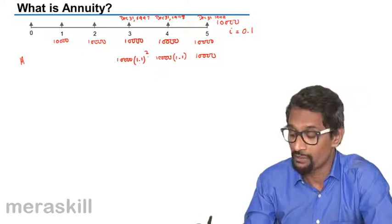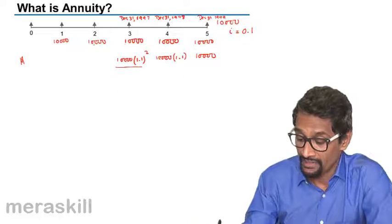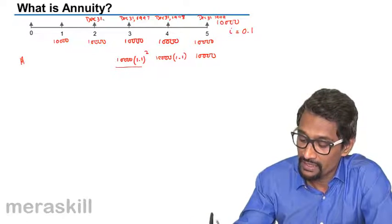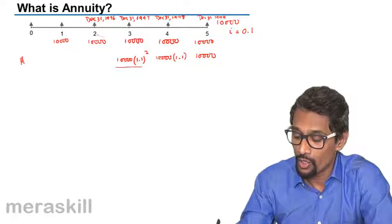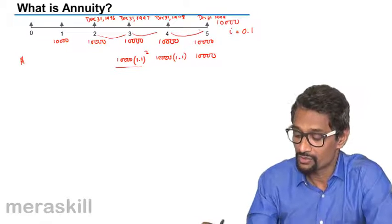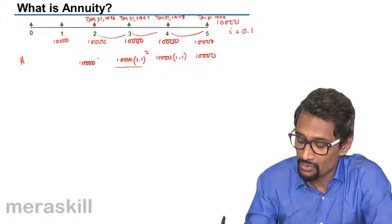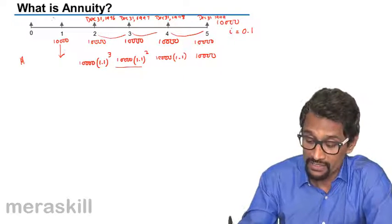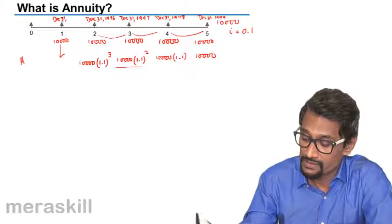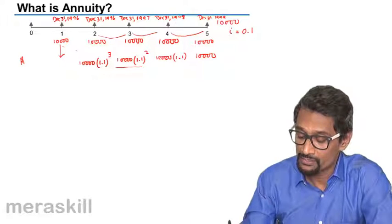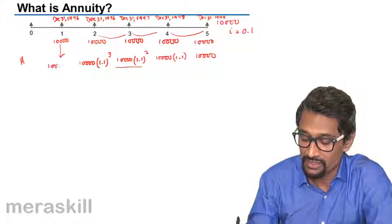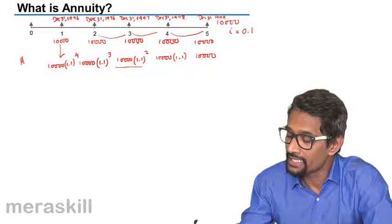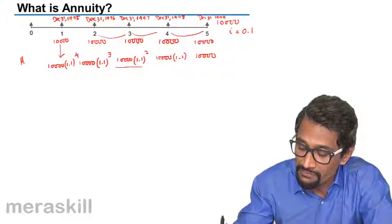The deposit made on December 31st 1997 accrues interest for two years, so it becomes ten thousand into 1.1 squared. The deposit on December 31st 1996 accrues for three years, becoming ten thousand into 1.1 cubed. Finally, the deposit made on December 31st 1995 accrues interest for four years, becoming ten thousand into 1.1 raised to four.